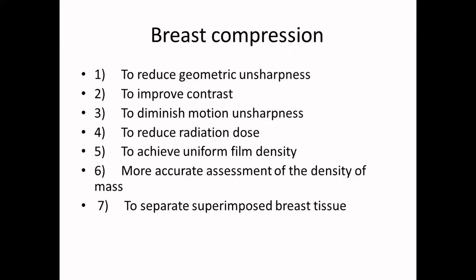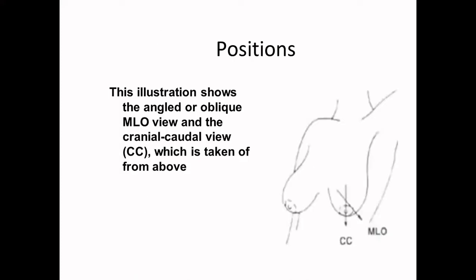Breast compression is done to reduce geometric unsharpness, improve contrast, diminish motion, reduce radiation dose, and make the breast of uniform thickness. It also allows more accurate assessment of mass density and separates superimposed breast tissue around a mass — the tissue anterior and posterior to the mass spreads out, enabling better imaging.